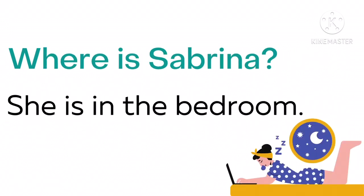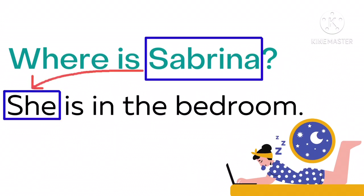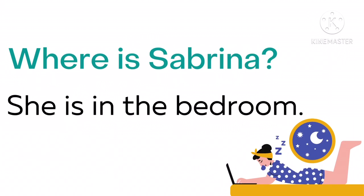Next, selanjutnya. Where is Sabrina? Di manakah Sabrina? She is in the bathroom — dia ada di dalam kamar tidur. Sabrina itu perempuan, jadi kita bisa menggantikan Sabrina dengan subjek she. Oleh sebab itu, pada jawaban, kita juga mulai dengan subjek she. Dan jangan lupa untuk meletakkan to be is setelah subjek she.